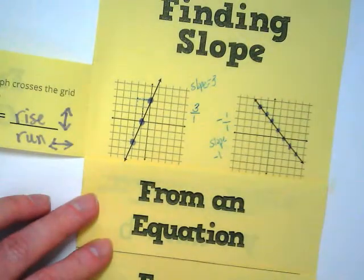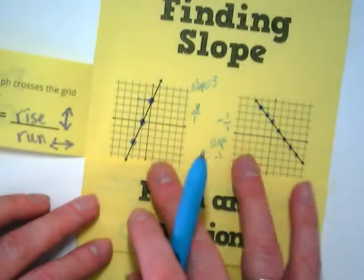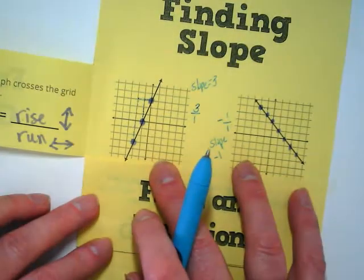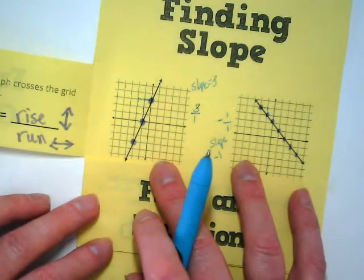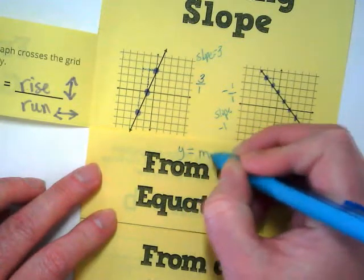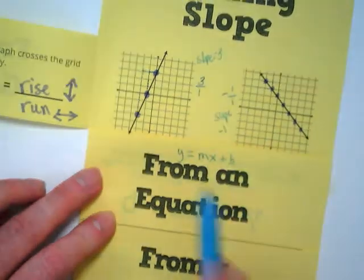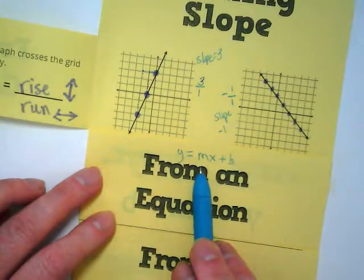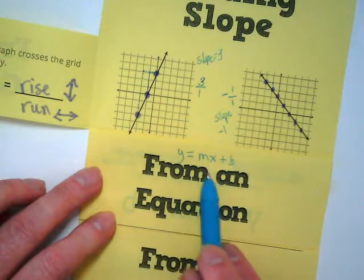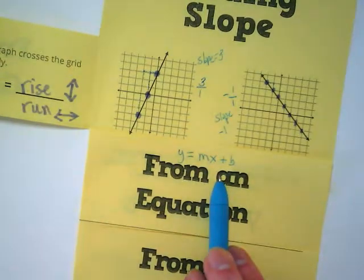If it's going this direction down, it's negative. Now, before we go to from an equation, I want us to connect this to what we were doing yesterday with equations. Do you guys remember the equation we talked about? Y equals mx plus b. And the m was equal to the slope, and the b was equal to what? The y-intercept. The y-intercept, where the graph is crossing the y-axis.